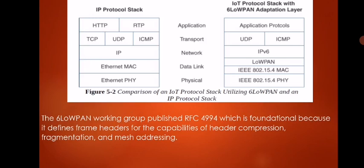In the 6LoWPAN stack: the first layer is the application protocol, the second is UDP (User Datagram Protocol), and the third is IPv6 at the network layer. Between the network layer and data link layer there is one more sub-layer called LoWPAN. This sub-layer converts IPv6 packets to be compatible with IPv4, because the IEEE 802.15.4 MAC and physical layers are strictly compatible with IPv4.